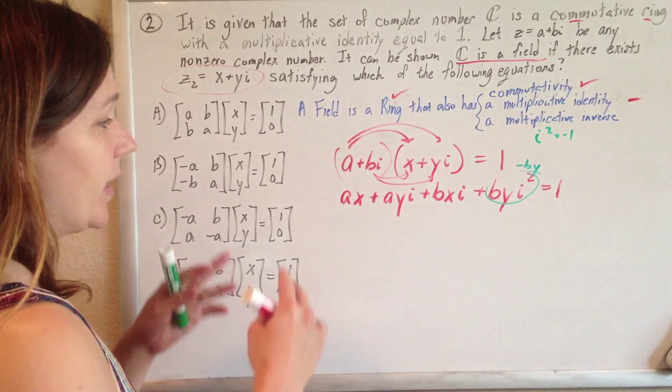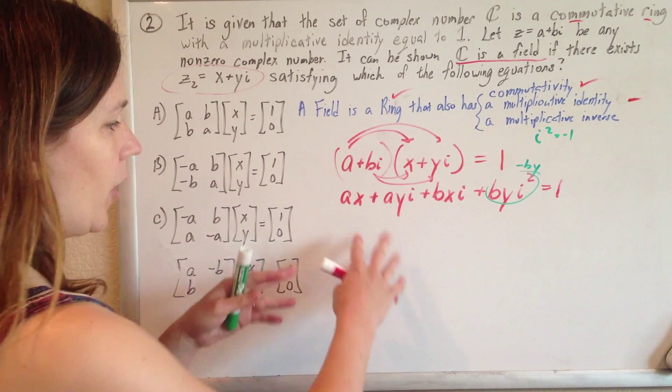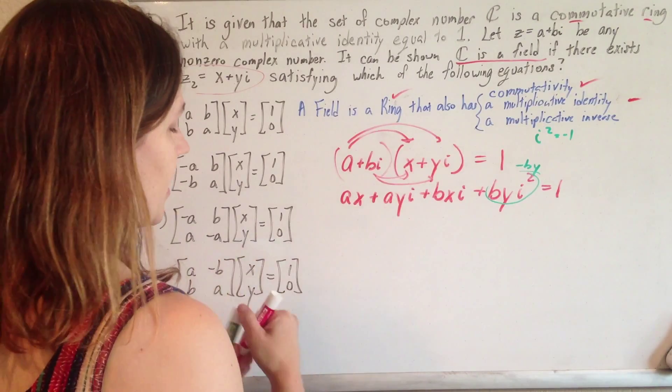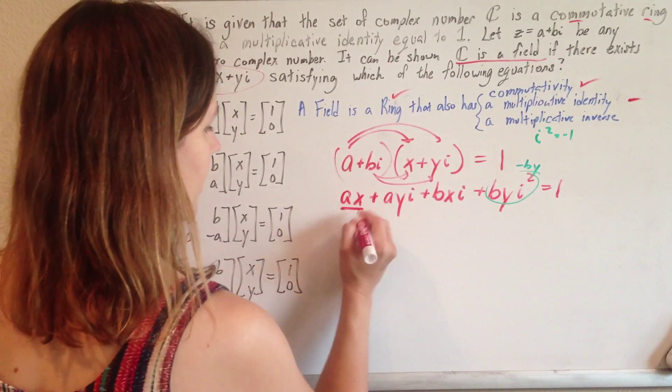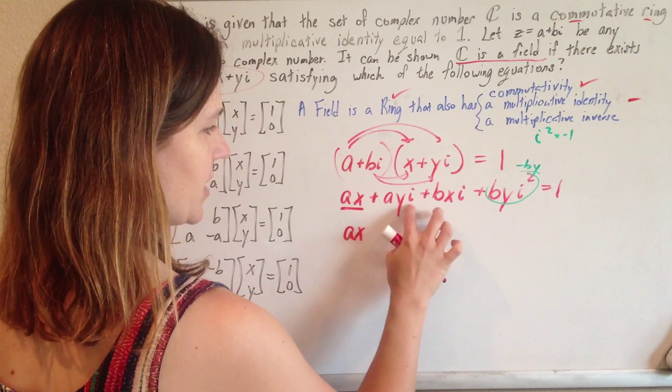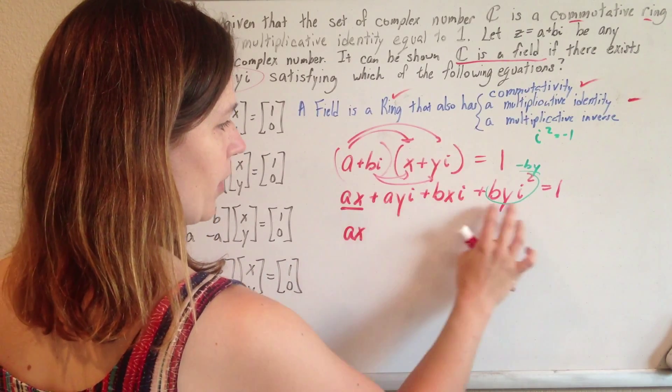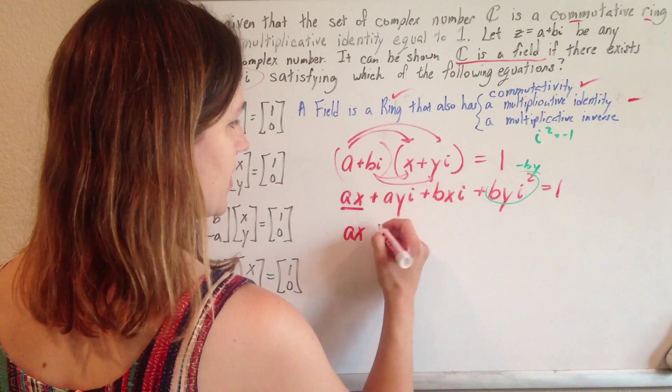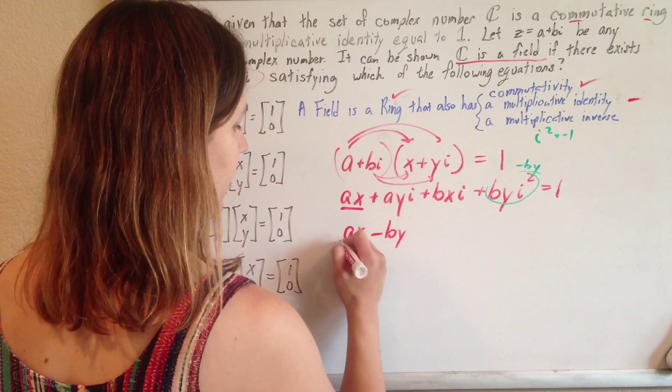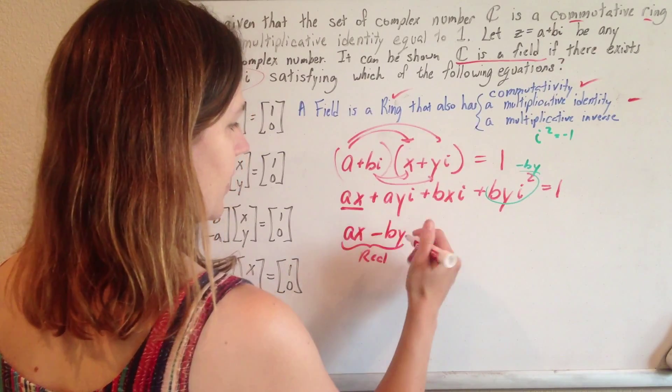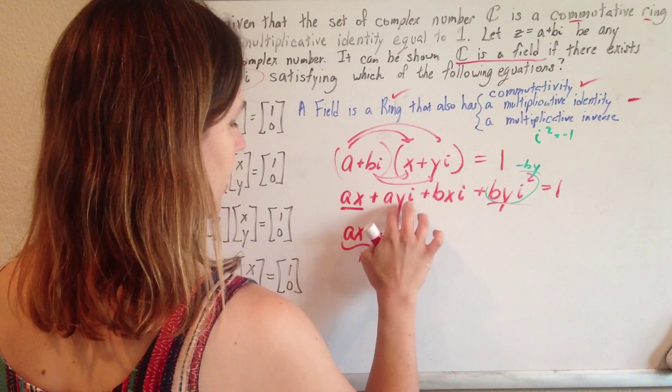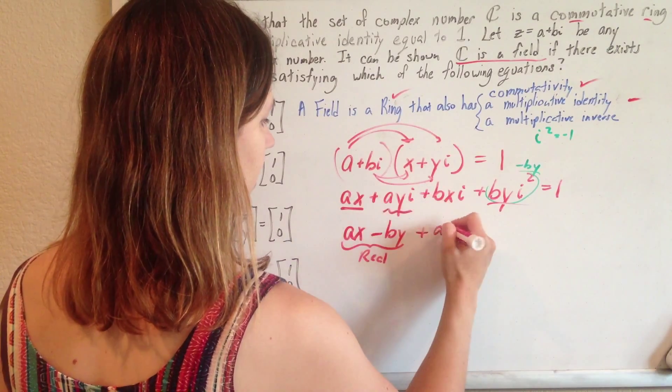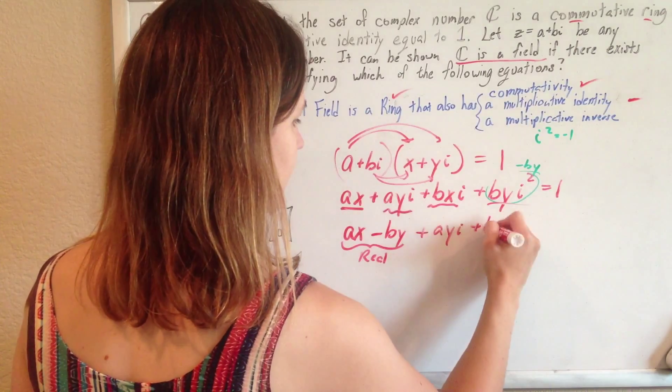So now we gather up all of our real terms and all of our imaginary terms on this side. So ax is real. This guy has an imaginary part. This guy has an imaginary part. Remember, this guy became real because i squared is negative 1, so this is just minus by. And this is the real stuff. And then the imaginary stuff is the leftovers, this plus ayi and then plus bxi.